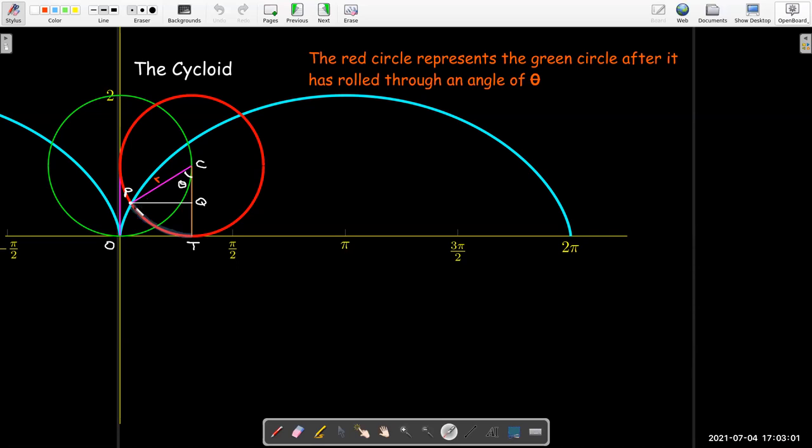And so I'm just going to draw a line segment, which is parallel to the x axis over to meeting this radius here, which drops down directly from the center. So I've got a right triangle. This angle theta is the same angle through which the circle has been rotated. I'll call this point Q. The center is C. The original origin is O. Again, our circle has radius R.